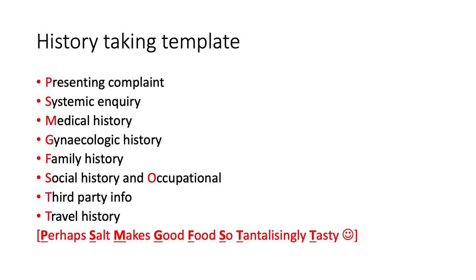Here's my handy history taking template. My mnemonic is 'Perhaps salt makes good food, so tantalizingly tasty.' P stands for presenting complaint. S is systemic inquiry — going progressively through the different systems: central nervous system, cardiovascular, respiratory, renal, gastrointestinal, endocrine, hematological, infectious disease, rheumatological, skin and eyes. M is for medical history — what conditions a patient has, what medications they're taking, any allergies, and gynecological history. F is for family history, S for social history including alcohol, drug use, and occupational history. O is occupational. T is for third party information and T for travel history.